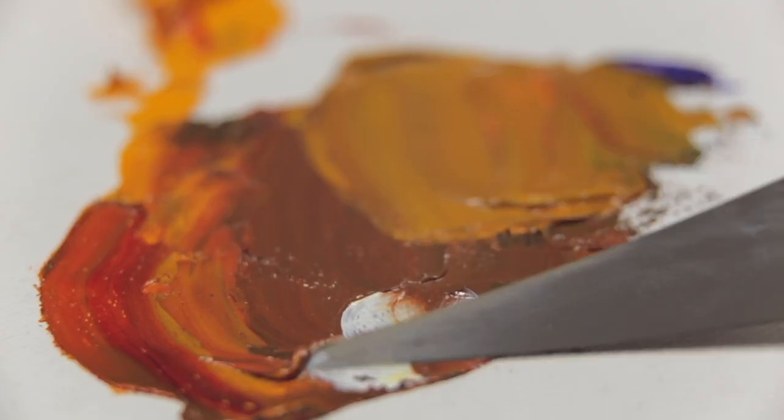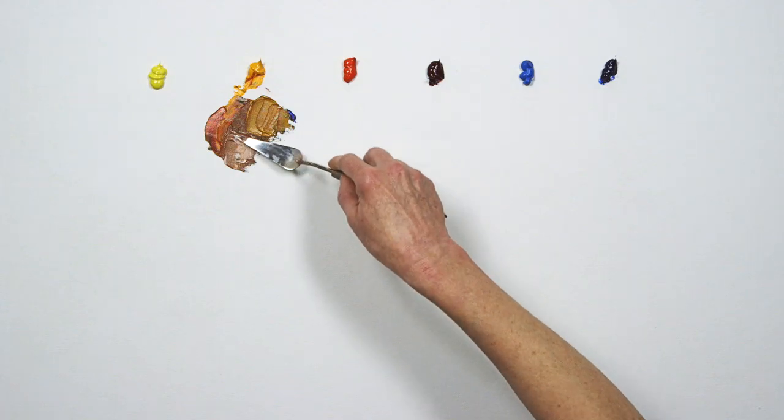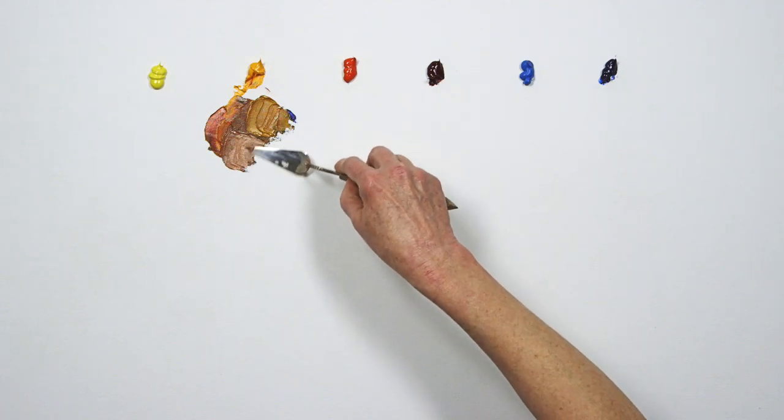You can see that adding a bit of Titanium White creates a cool, lighter value brown. But to maintain the richness of the pigments, I try to avoid white.